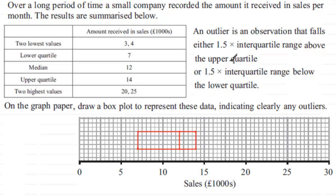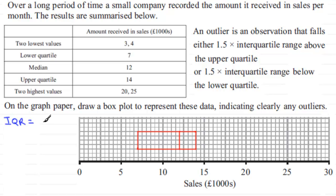Now having drawn the box, we've got to put on the outliers. We're told that an outlier is an observation that falls either 1.5 times the interquartile range above the upper quartile, or 1.5 times the interquartile range below the lower quartile. To work those out, let's first work out what the interquartile range (IQR) is.